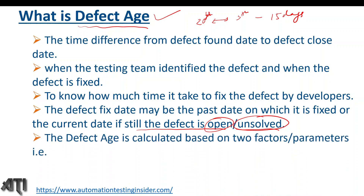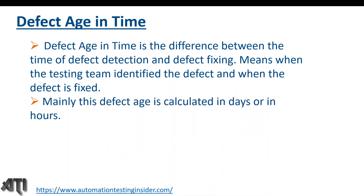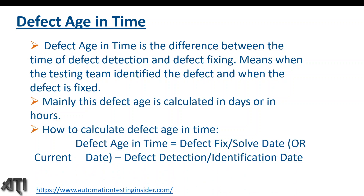Defect age is calculated based on two parameters. One is based on time, and the other is based on software development phases. Defect age in time is the difference between the time of defect detection and defect fixing — meaning when the testing team identified the defect and when the defect was fixed. This defect age is mainly calculated in days or hours.